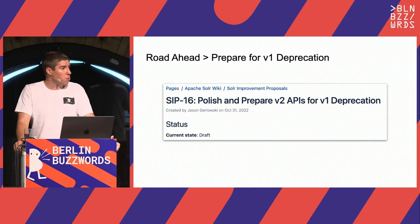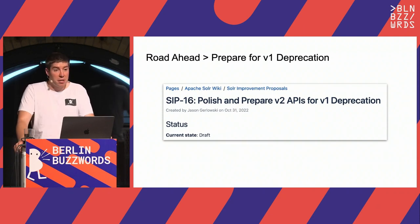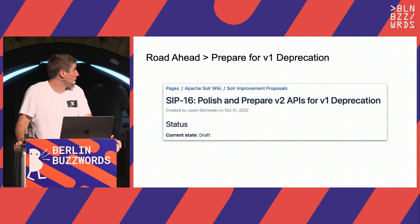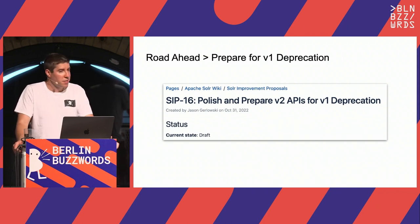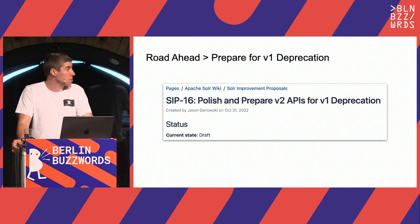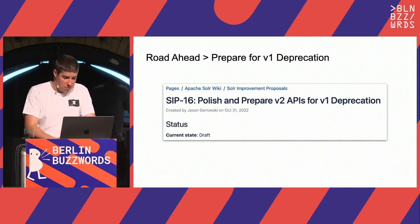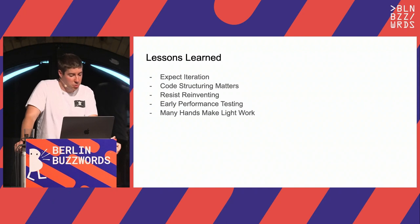The last road to cross is deprecating and ultimately removing the V1 API. For Solr, this is still several major versions out, but we've started discussions for what this might look like. Solr has a process called Solr Improvement Proposals for navigating large changes in the community, and we've started one of these for eventually deprecating V1, even though it's some time away.